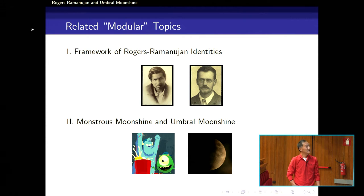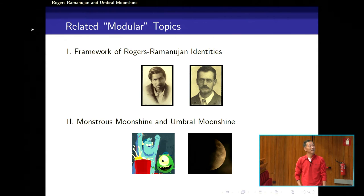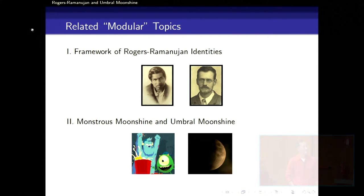The last letter of Ramanujan is related to this cartoon — maybe you know it from Disney, Monsters Inc. It's related to Monsters Moonshine and the revisitation of this subject in a field we now call umbral moonshine, which is related to the pursuit of a three-dimensional quantum gravity theory.